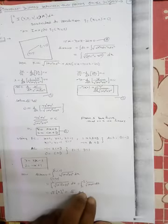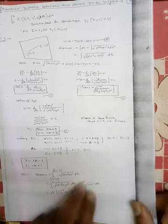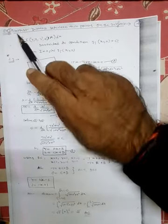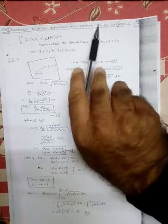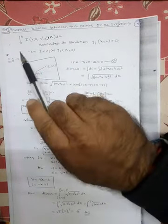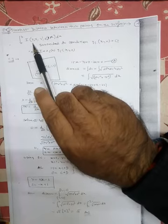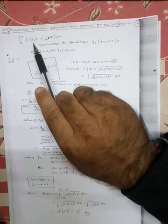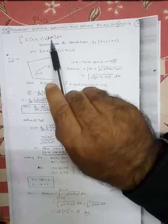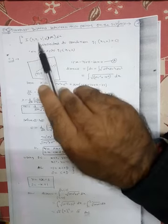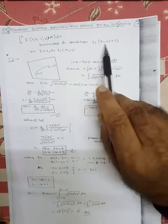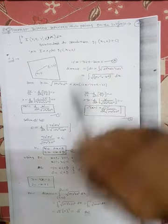Now we have a third example based on the shortest distance between two points on a surface. The problem is to extremize the integral I = ∫f(x, y, z, y', z') dx subjected to the surface constraint g(x, y, z) = c. Here instead of an integral constraint, we have an algebraic equation.